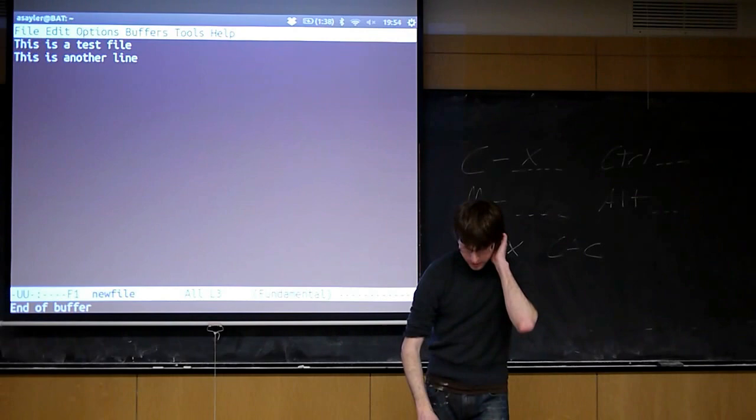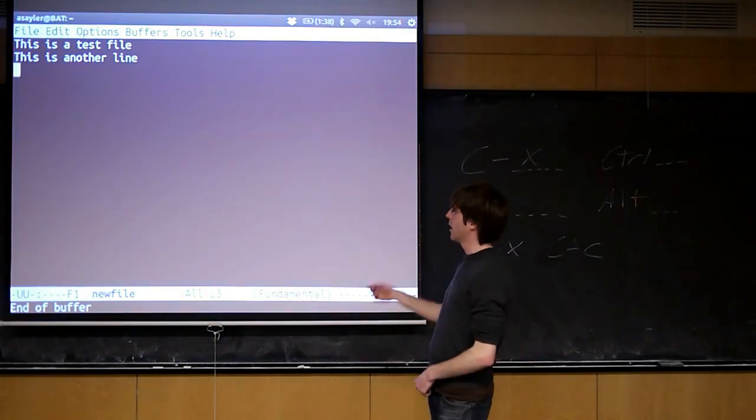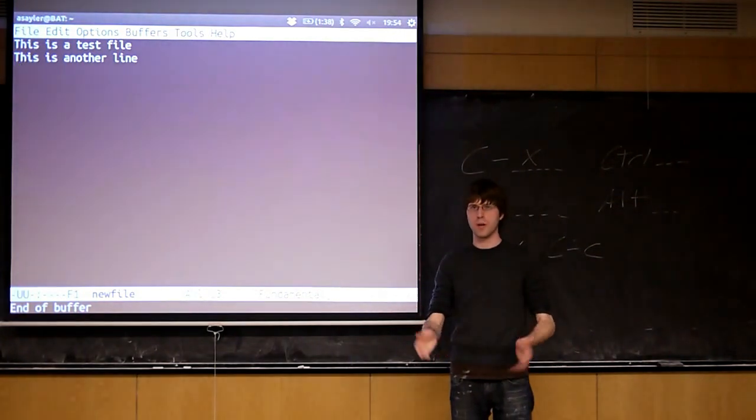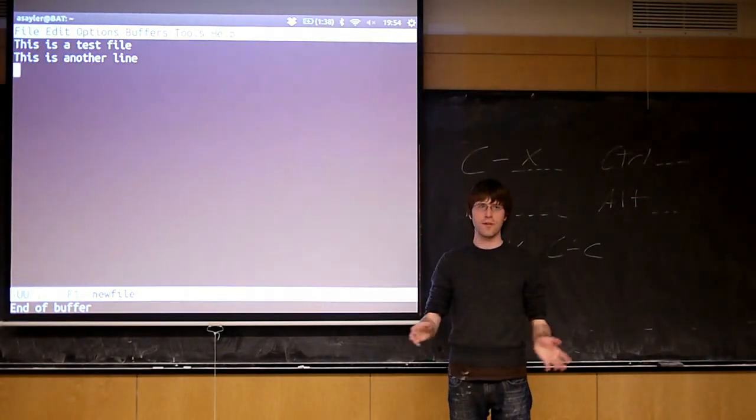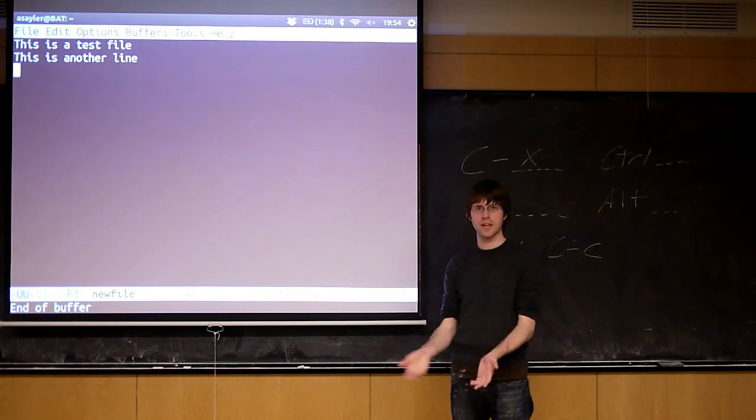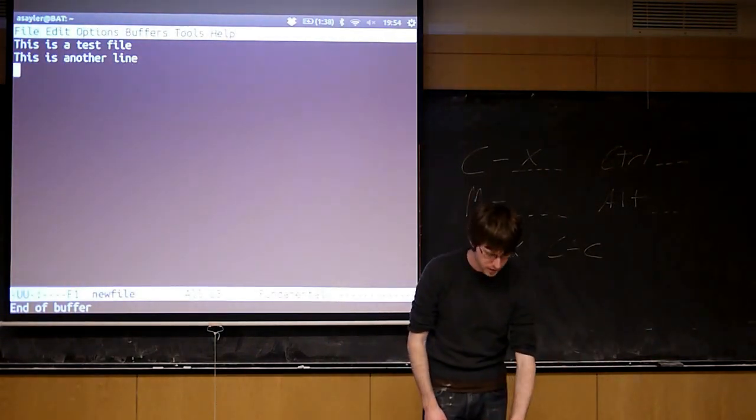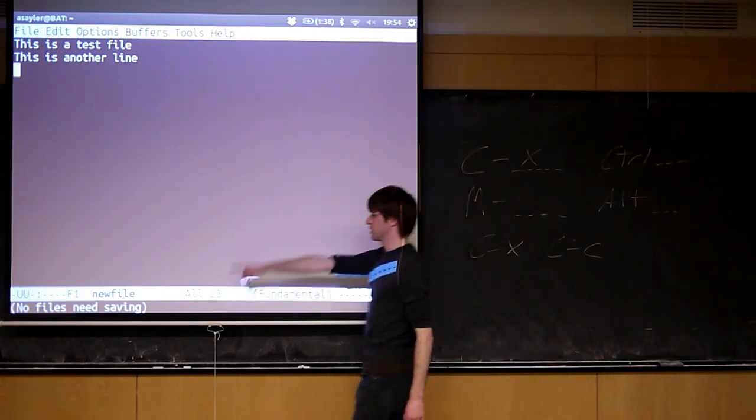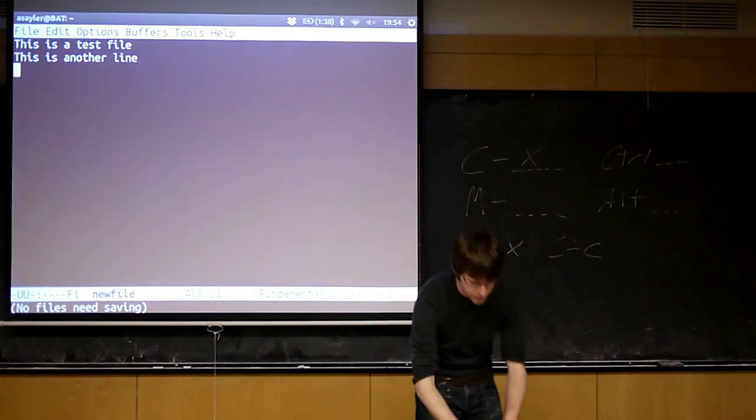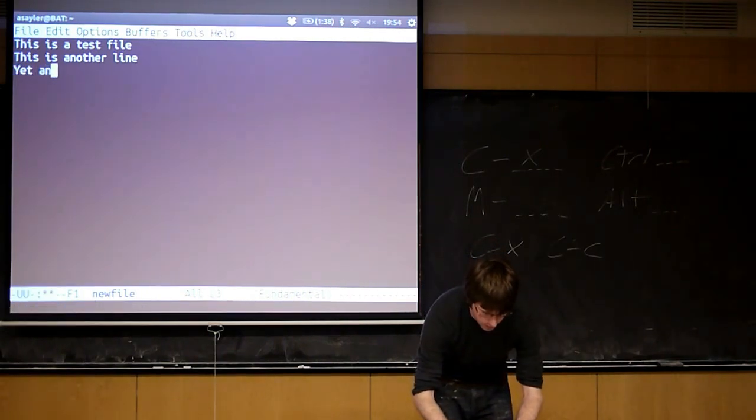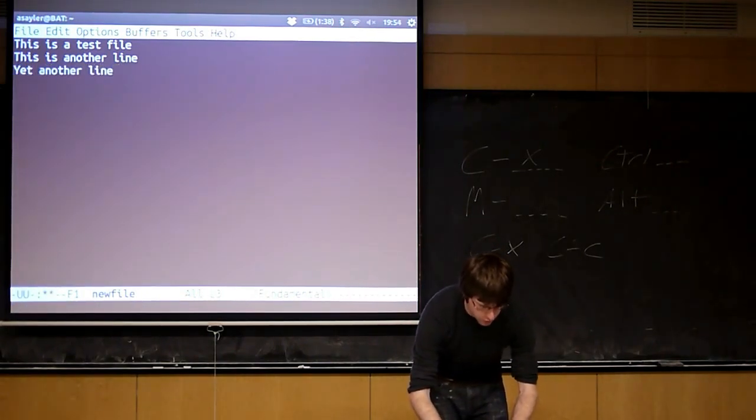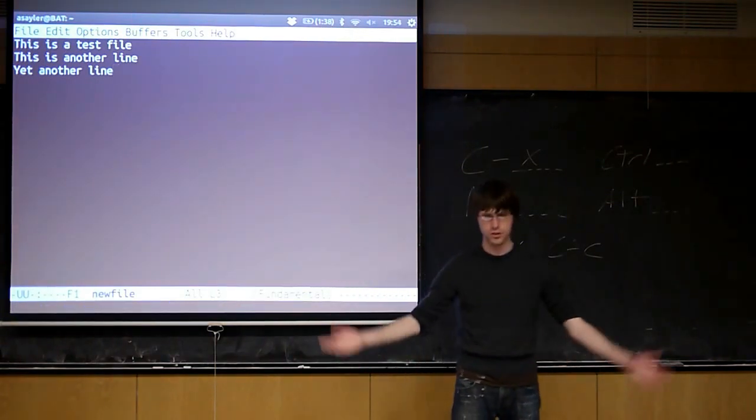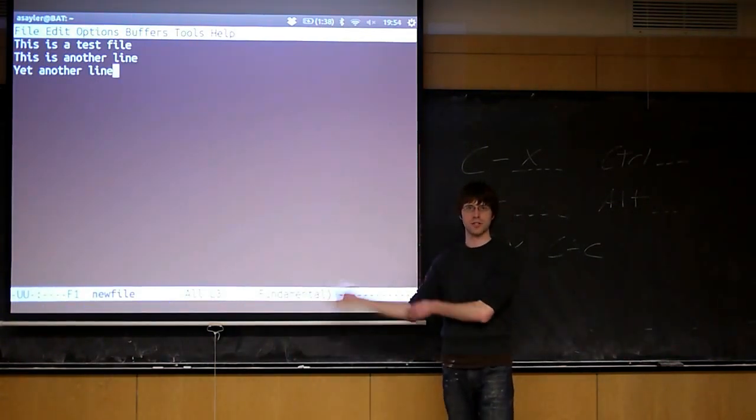So we've done the basics of editing. We can open and close a file, we can save a file. Sometimes you want to save a file without having to exit Emacs. If you're writing a long file, it's a good idea to save it every few minutes in case your computer crashes. The command to save is Control X S. You'll see it says no files need saving because I haven't made any changes. If I add another line and do Control X S, now it's going to prompt me, do you want to save the file? If I hit yes, it doesn't close because I just told it to save.